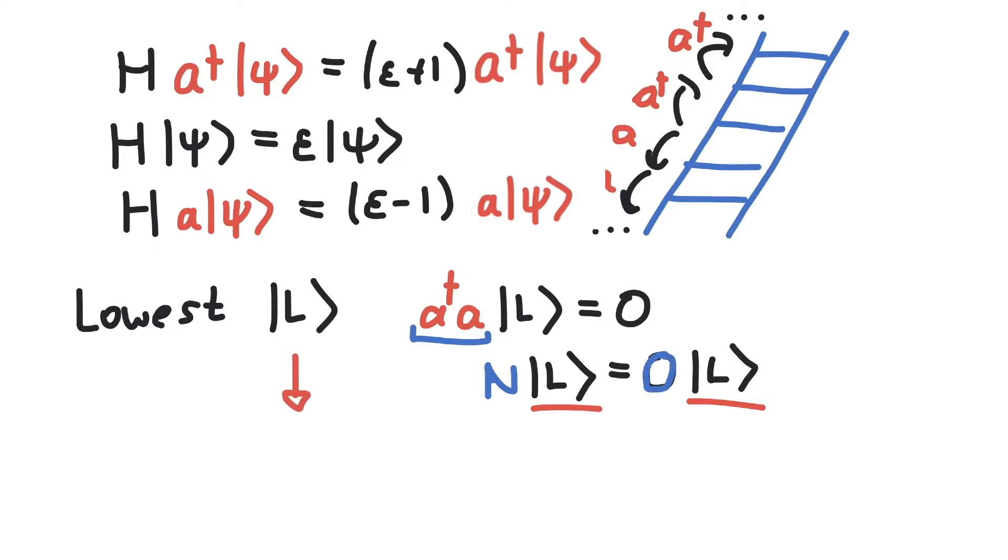So let's call our lowest state zero. We see that the eigenvalue lambda is zero, and if you remember, epsilon, the energy, is lambda plus one-half. So for our lowest state in the harmonic oscillator, we have epsilon is one-half. So we have seen that the ladder stops at the bottom.